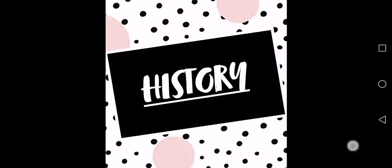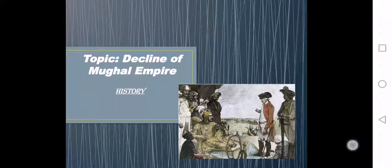Assalamu alaikum, Senior 2. I hope you all are fine. Today in class we will see our second topic of final term, which is from your history portion, and the name of this topic is Decline of Mughal Empire. In today's lecture, I will give you some information and introduction of this topic which will help you to solve all your exercises and questions very easily, so listen carefully.